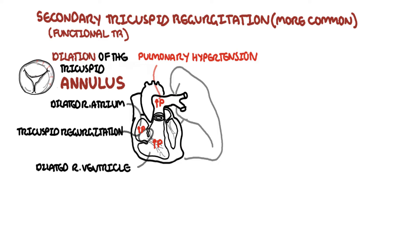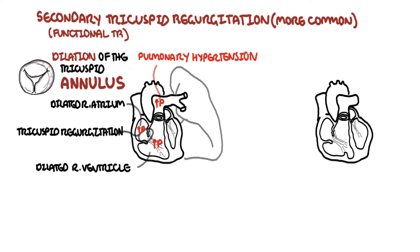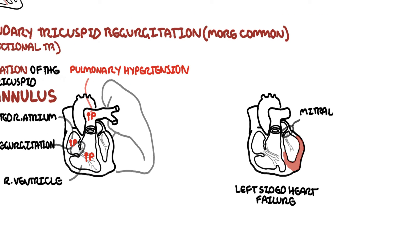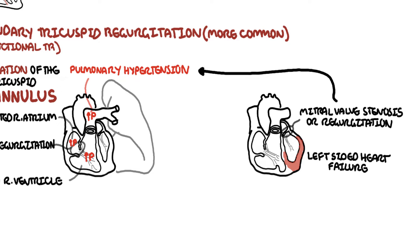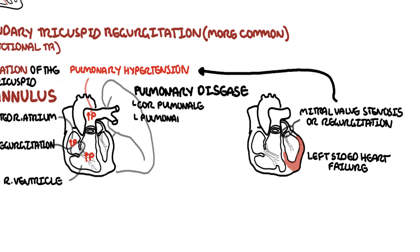Disorders that cause pulmonary hypertension and secondary right ventricular dilatation include left-sided heart failure, mitral stenosis or regurgitation — both of which cause pulmonary hypertension — as well as primary pulmonary diseases including cor pulmonale, pulmonary embolism, pulmonary fibrosis, and chronic obstructive pulmonary disease. Each of these causes can lead to pulmonary hypertension.